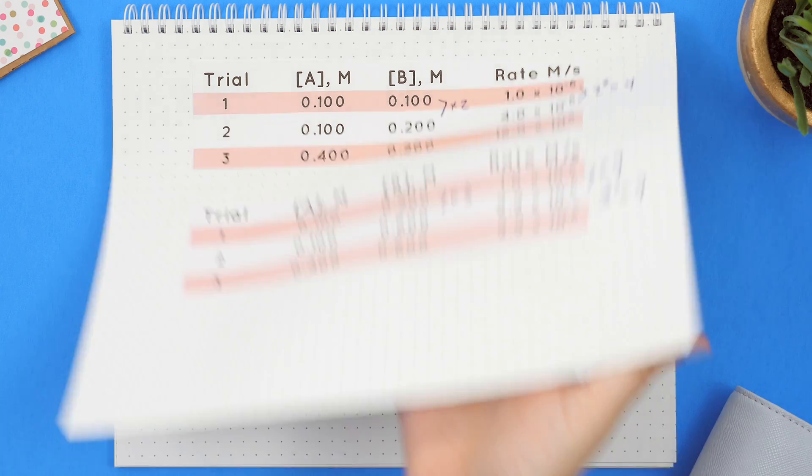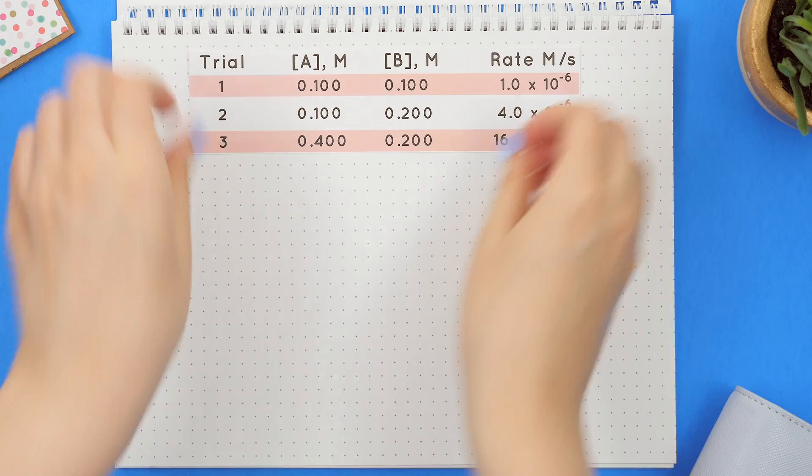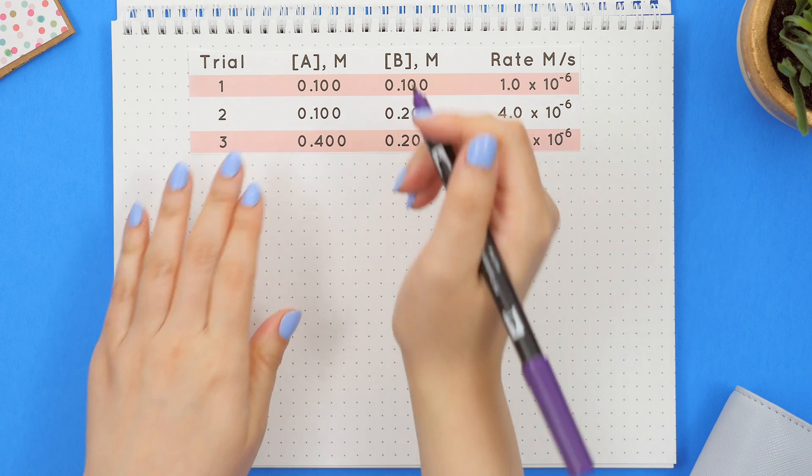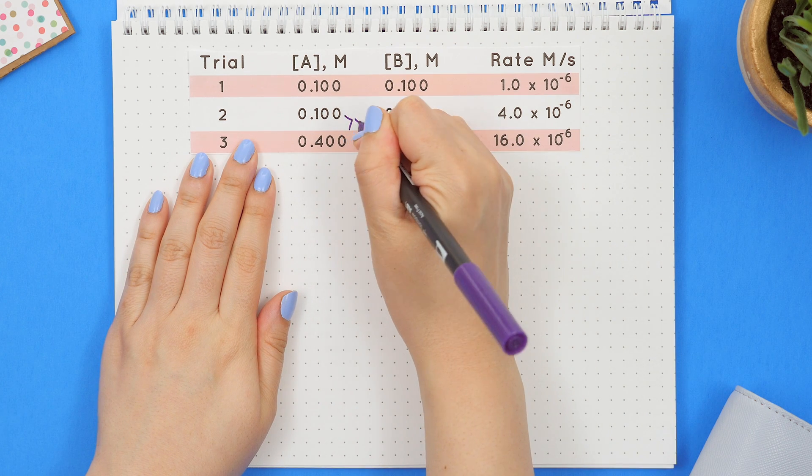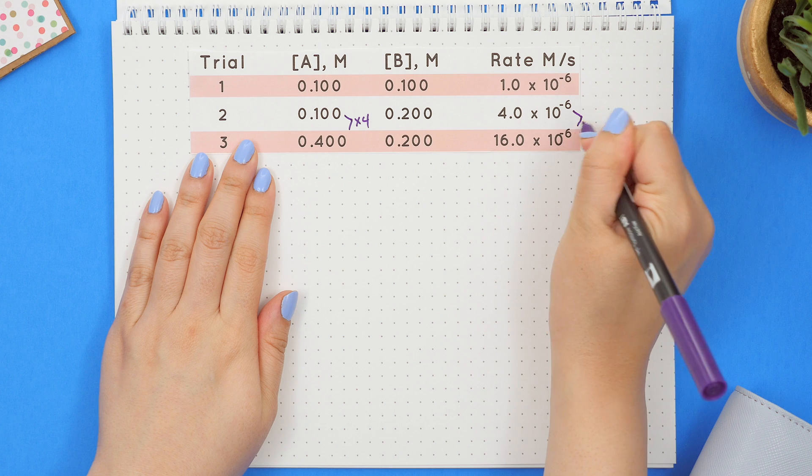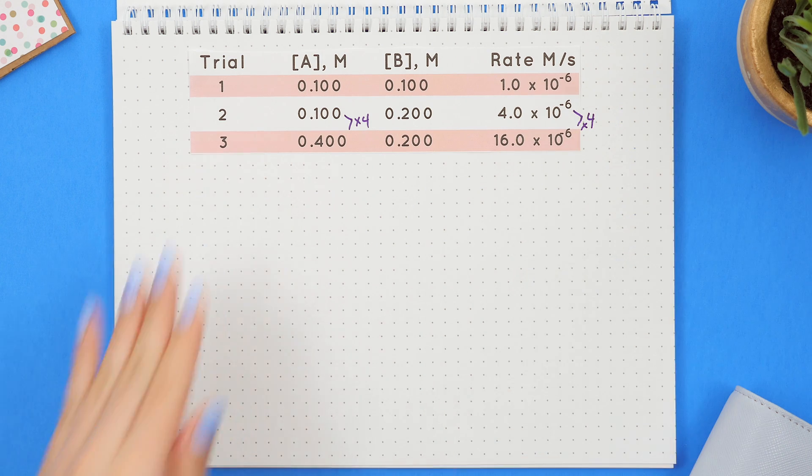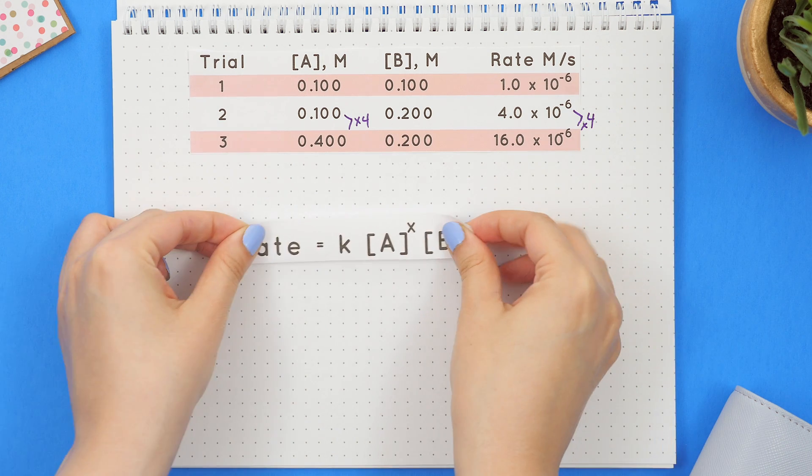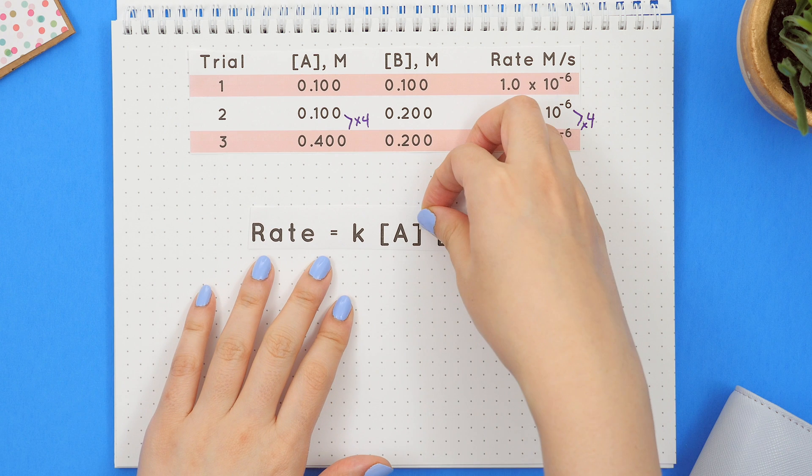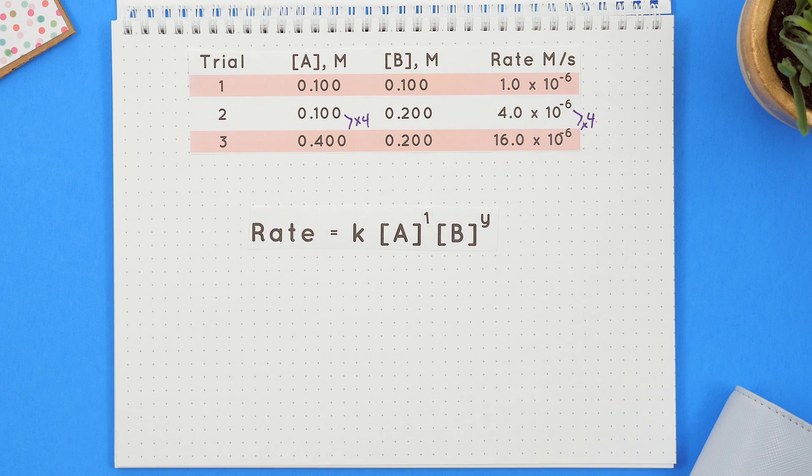All these tricks tell us the reaction order. Let's put this all together to find the rate law. For this table we found reactant A was first order because we multiplied both by four. So using the rate law formula we will replace x with one since x and y represent the reaction order for each reactant.